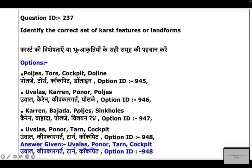In this question we also have Bajada. Bajada is created by alluvial fans under fluvial conditions. So again, this does not belong to karst topography and we can ignore this option as well.